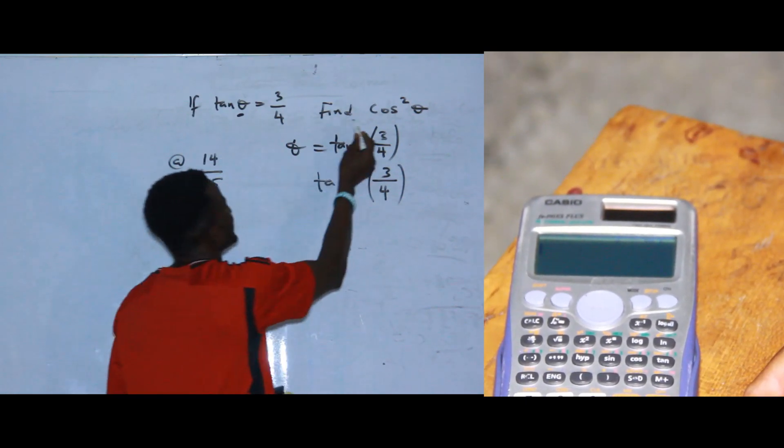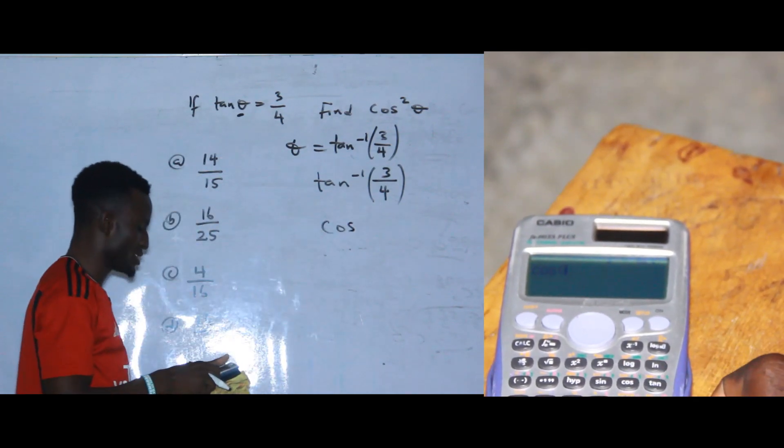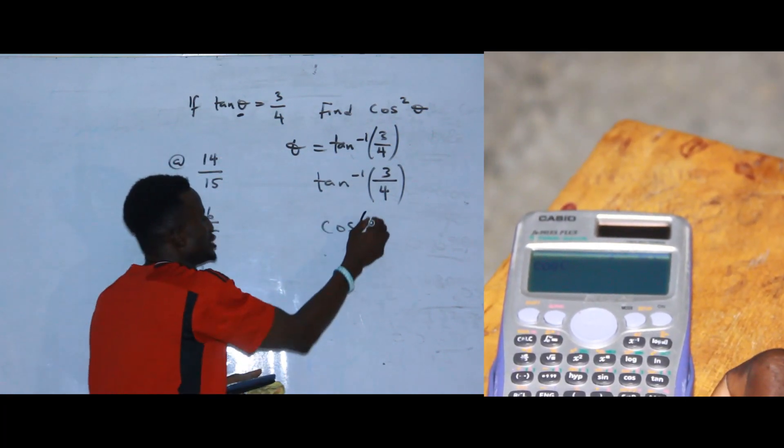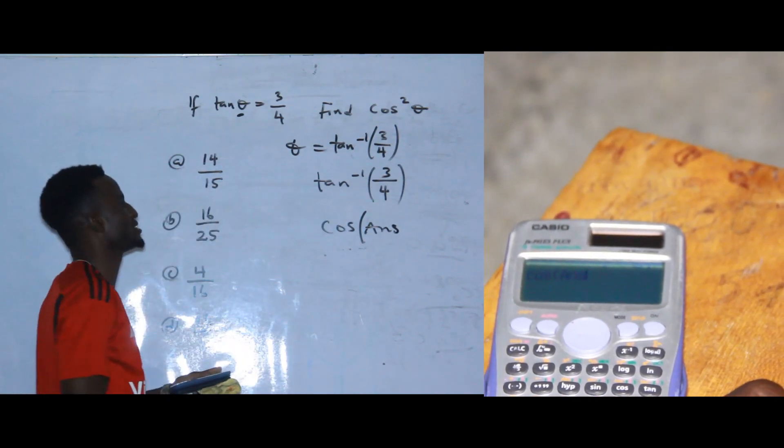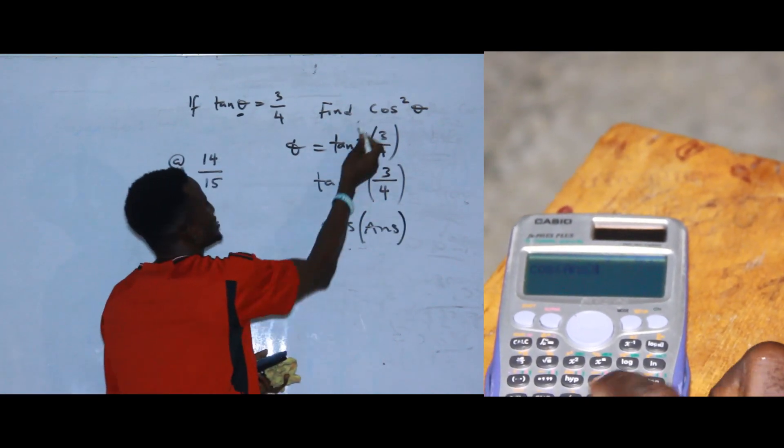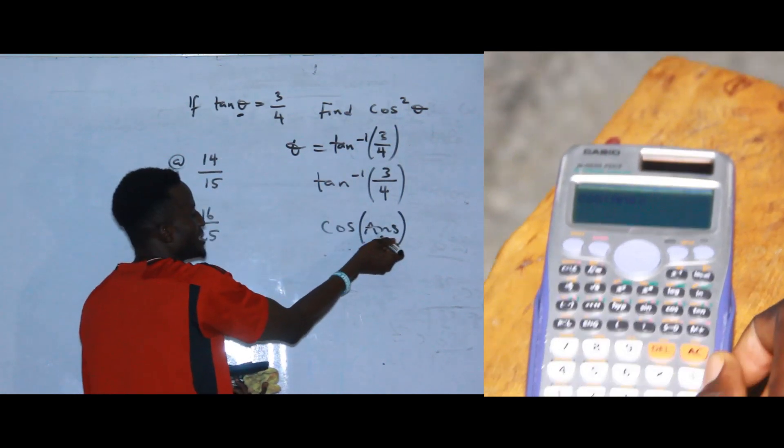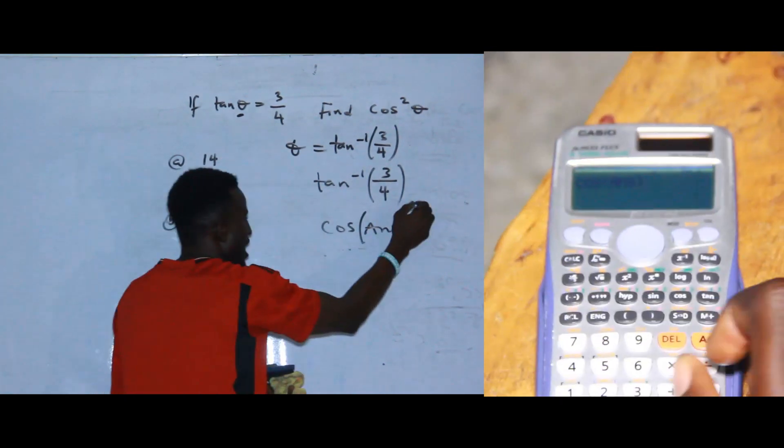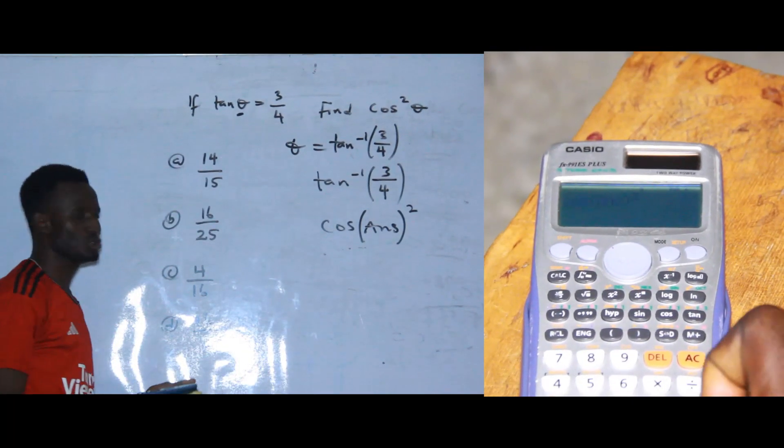We now go to the question. The question says find cos square theta. Now press cos, then press your answer button on the net. When you press answer button, close the bracket. Don't forget it is cos square theta, so the value we got initially, which is our value of theta, is our answer here. After you close the brackets, square it.